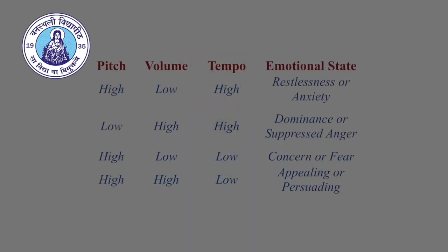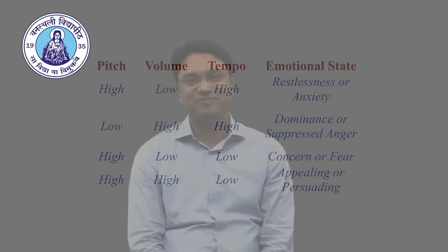Here are some examples of how vocal cues might manifest for different emotions. When pitch is high, volume is low, and tempo is high, it shows restlessness or anxiety. When pitch is low, volume is high, and tempo is high, it shows dominance or suppressed anger. When pitch is high, volume is low, and tempo is low, it shows concern or fear. And when pitch is high, volume is high, and tempo is low, it means appealing or persuading. So there is a strong connection of vocal cues to emotional state. A teacher with social and emotional intelligence has to pay attention to vocal cues to understand the intent behind a student's communication.